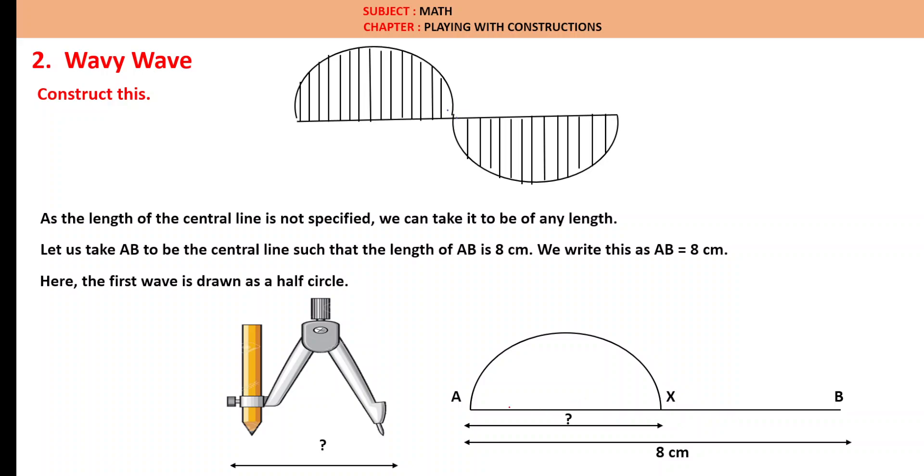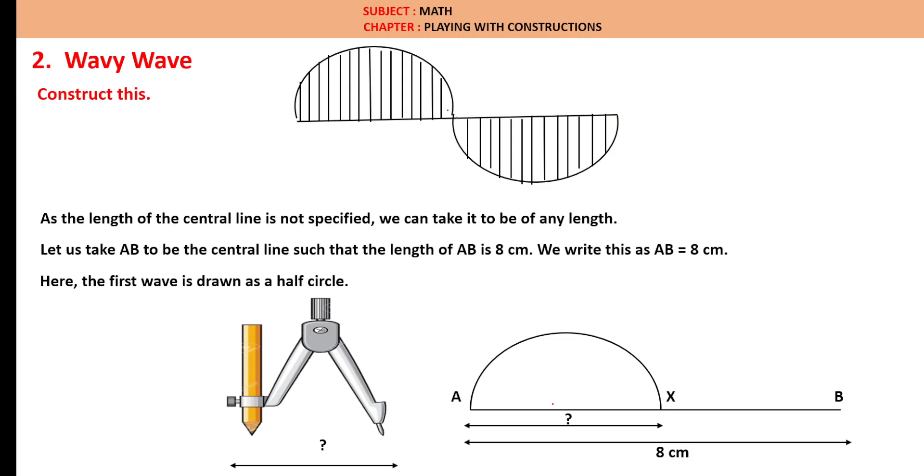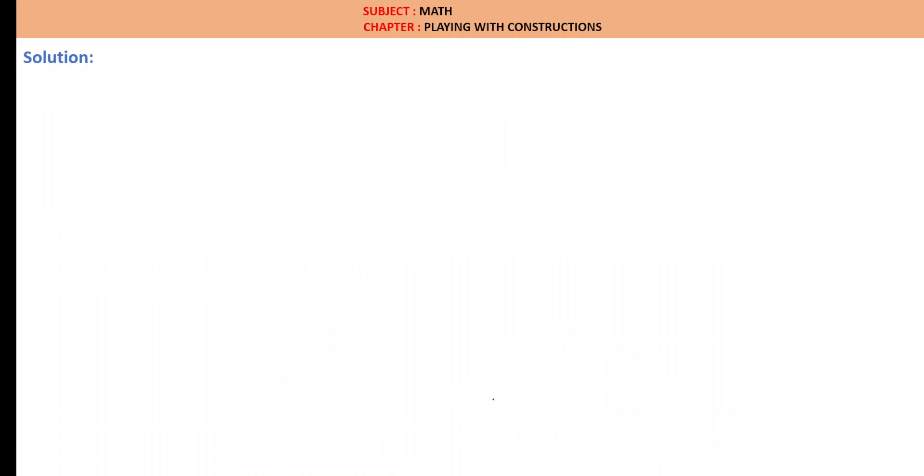If AB is 8 cm, AX will be half of that, so this will be 4 cm. But if this is 4 cm, this radius should be 2 cm. Let us draw a line of length AB equal to 8 cm.